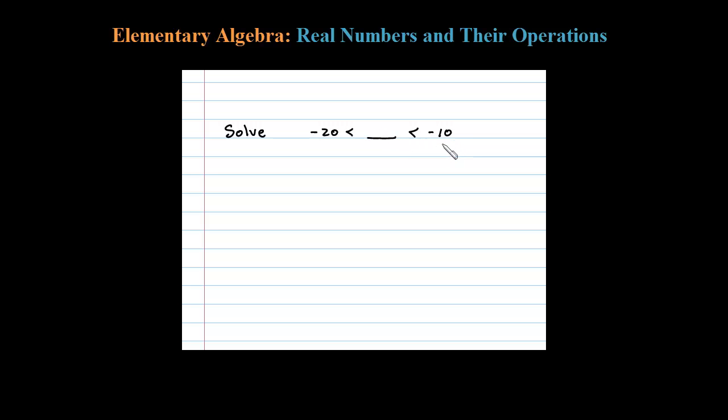Let's look at these numbers on a number line. Okay, so negative 20, I'll put a dot right there at that number, and negative 10, I'll put a dot at that number.